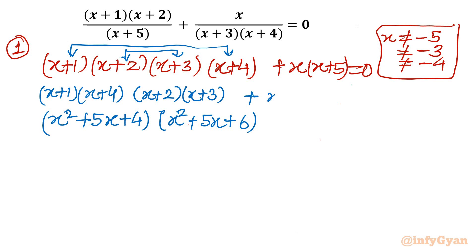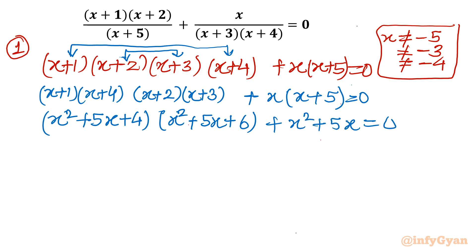Now the last term is x(x plus 5). If you take that product, you are again getting an x² plus 5x term. So a simple approach is to directly substitute x² plus 5x equal to t (or y) and then solve — you will get 4 solutions.